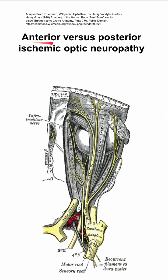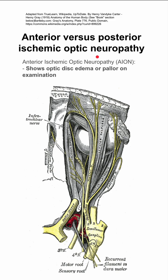This is a comparison between anterior and posterior ischemic optic neuropathy. Starting with anterior ischemic optic neuropathy — on examination, you'll see optic disc edema or pallor, and that's distinct for the anterior version and not seen in posterior ischemic optic neuropathy.